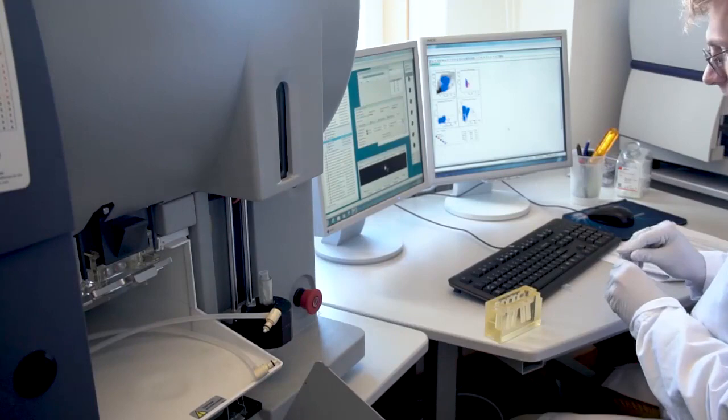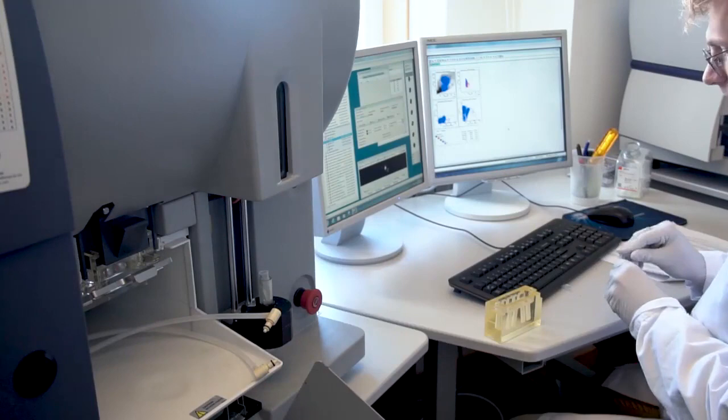Once the FACS machine has been properly set up, perform reanalysis of the target population by sorting at least 100 target cells into a new microcentrifuge tube.